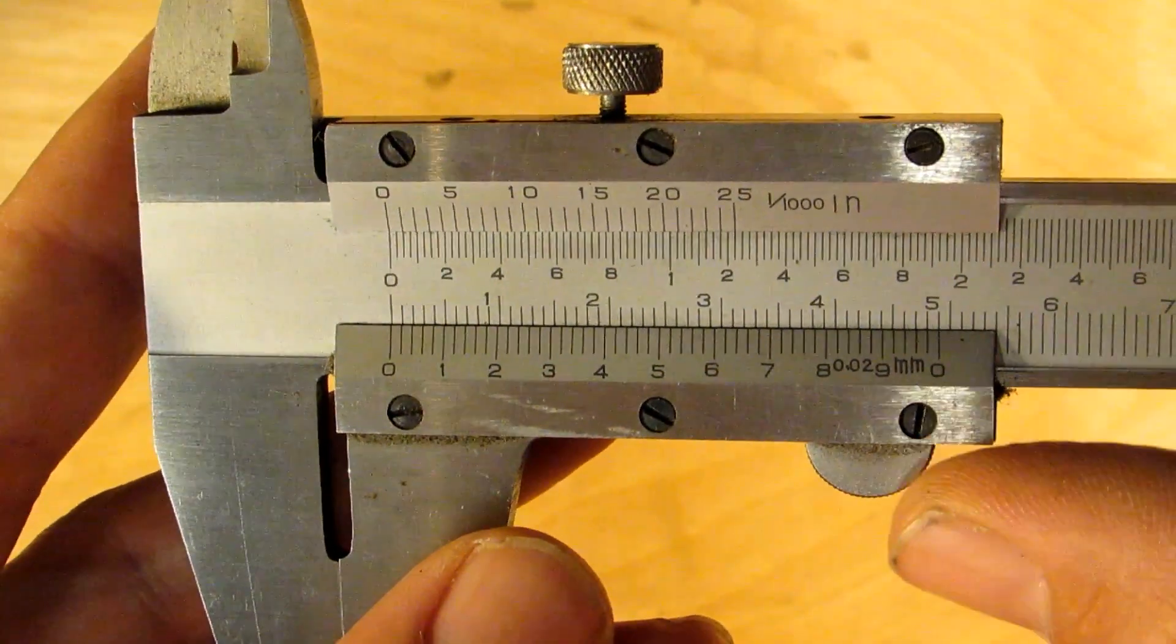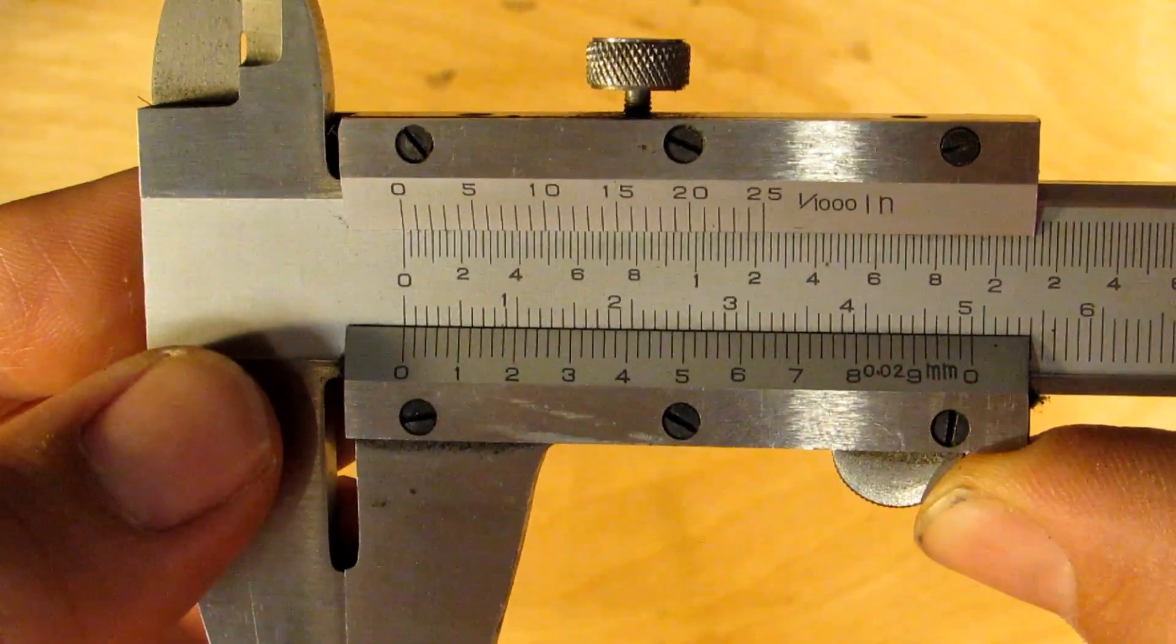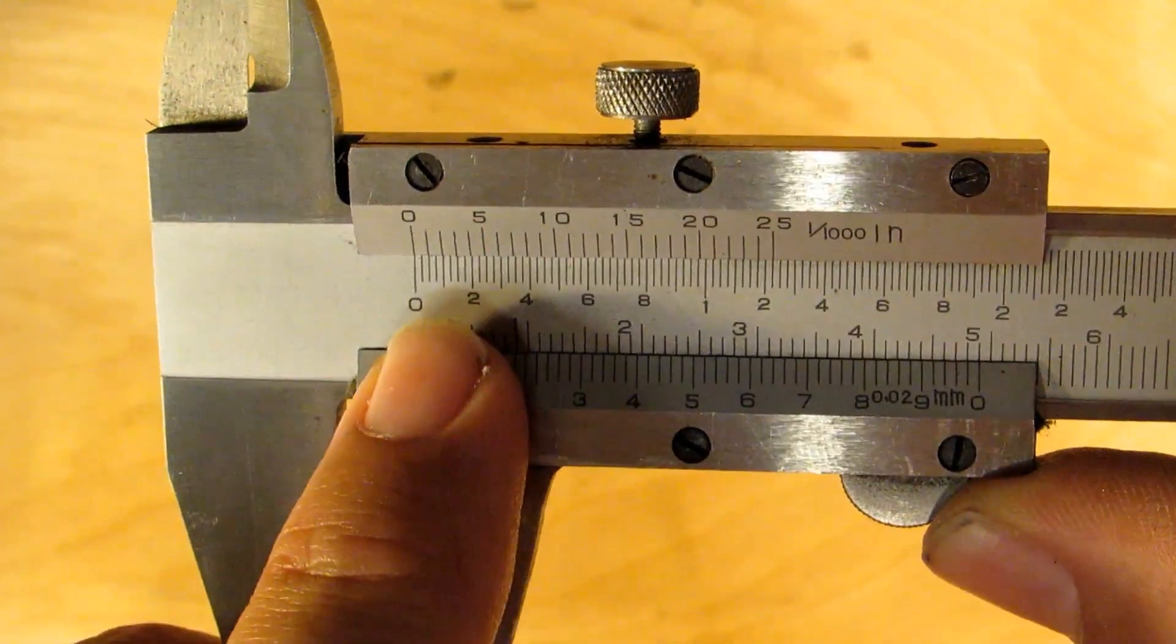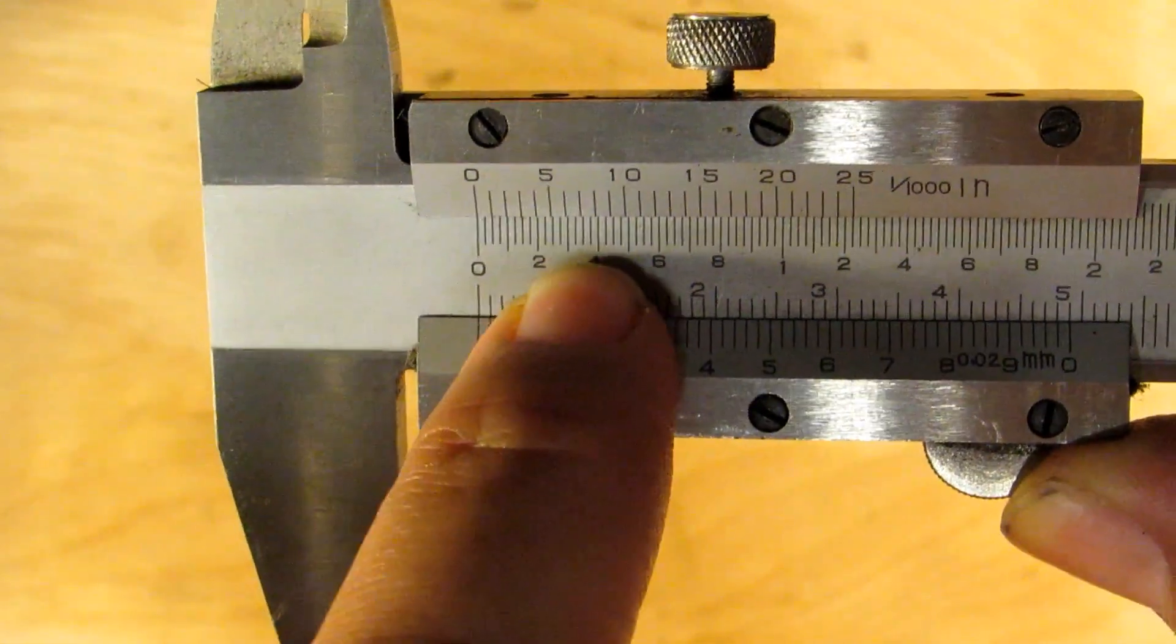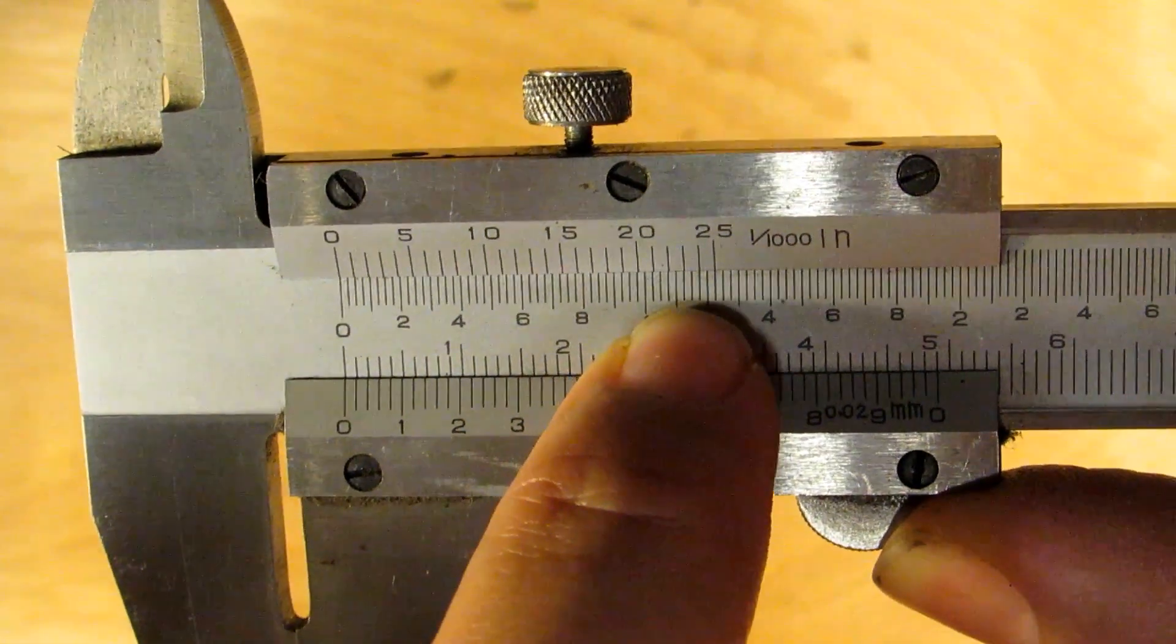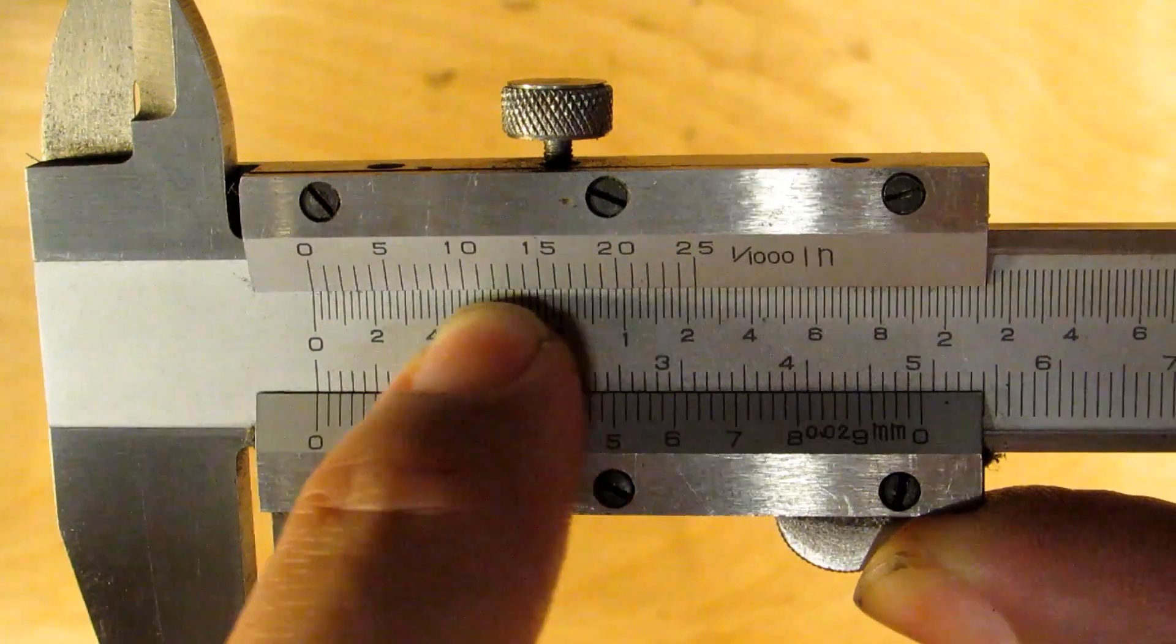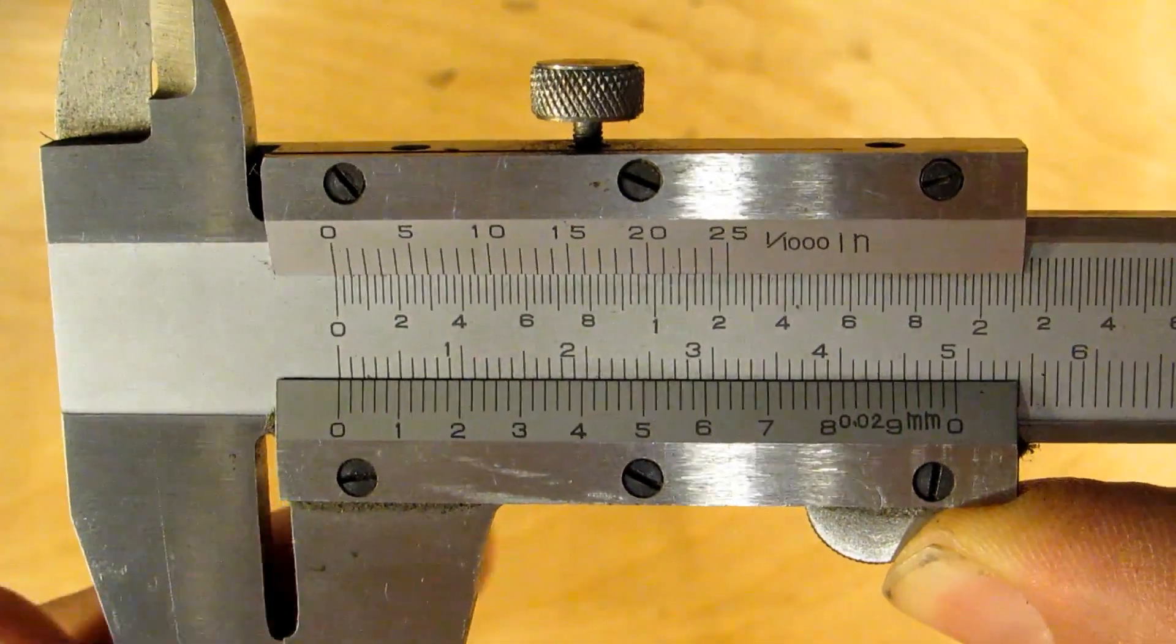So here I've got a vernier caliper. It's got an inch scale and a metric scale. We'll pay attention to the inches for this video. Each mark on this main scale is twenty-five thousandths of an inch and then you have 25 graduations on the vernier scale.